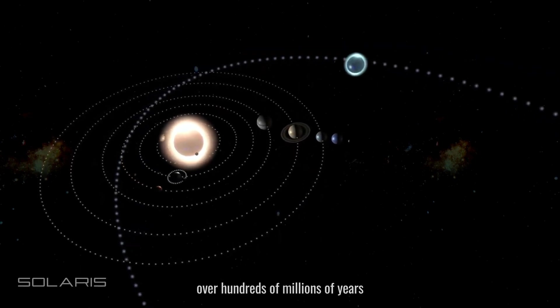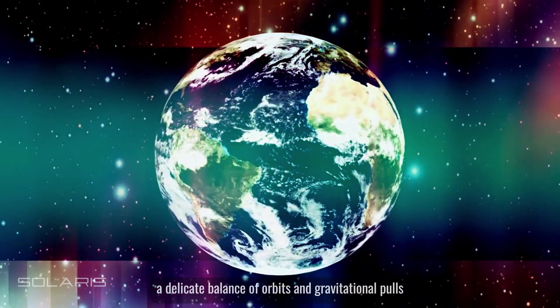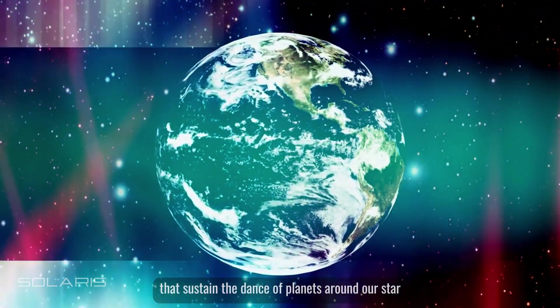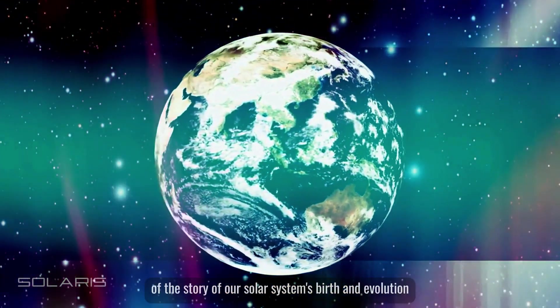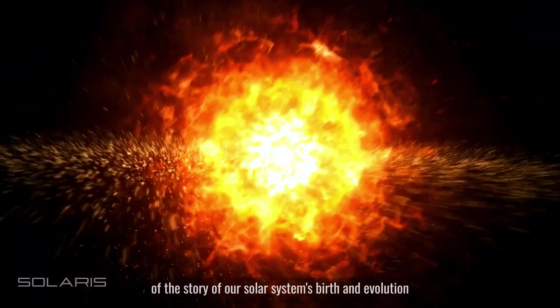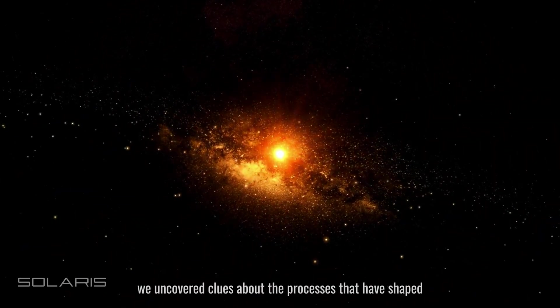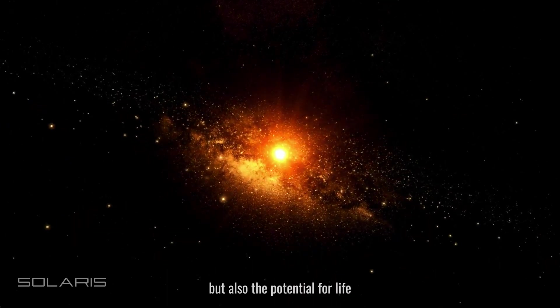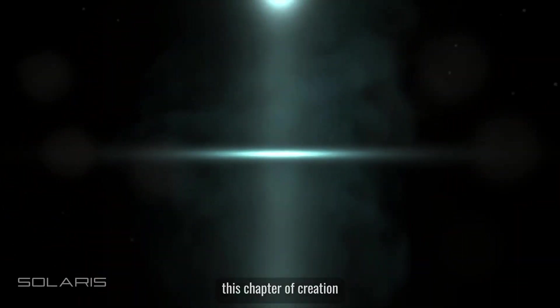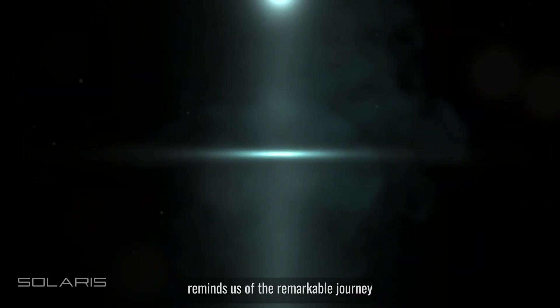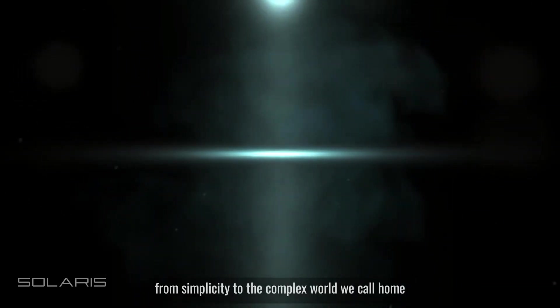Over hundreds of millions of years, the solar system settled into its current configuration, a delicate balance of orbits and gravitational pulls that sustained the dance of planets around our star. From the fiery surface of Mercury to the icy rings of Saturn, each planet tells a part of the story of our solar system's birth and evolution. In understanding the origins of our solar system, we uncover clues about the processes that have shaped not only our cosmic neighborhood, but also the potential for life elsewhere in the universe. This chapter of creation reminds us of the remarkable journey from dust to planets, from simplicity to the complex world we call home.